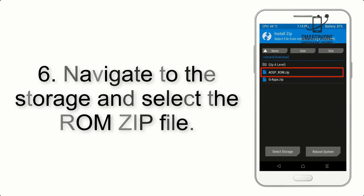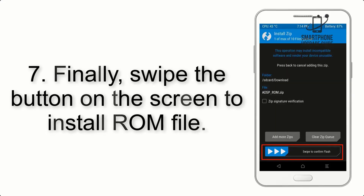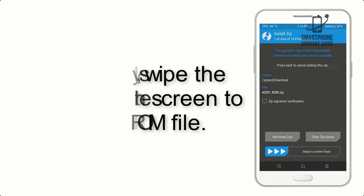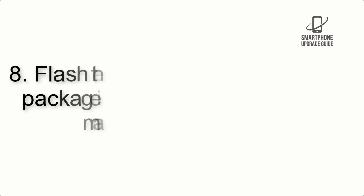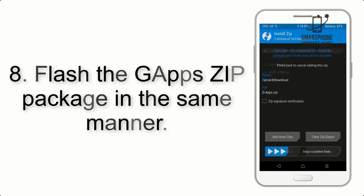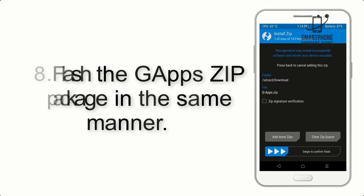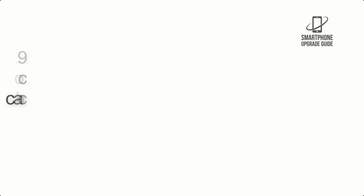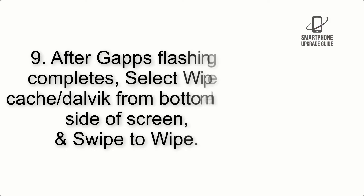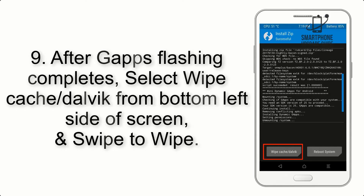Step 6: Navigate to the storage and select the ROM zip file. Step 7: Finally, swipe the button on the screen to install the ROM file. Step 8: Flash the GApps zip package in the same manner.